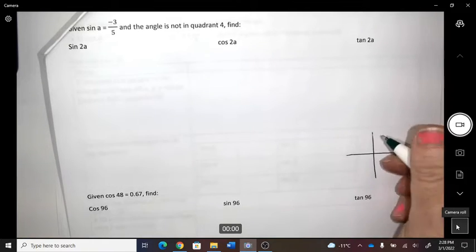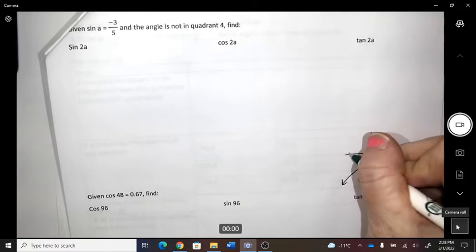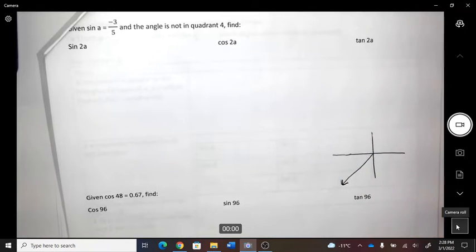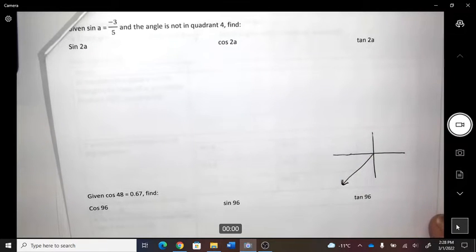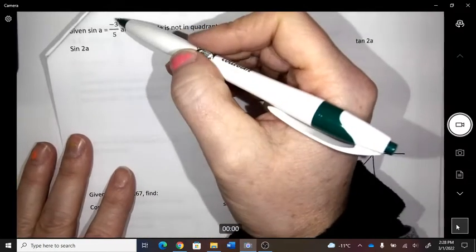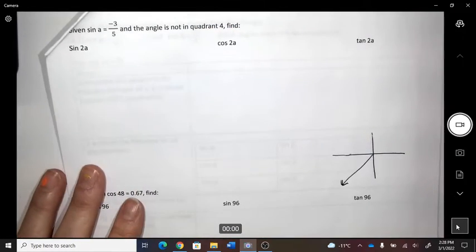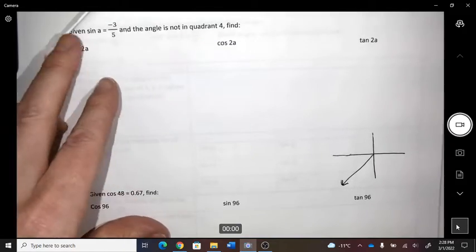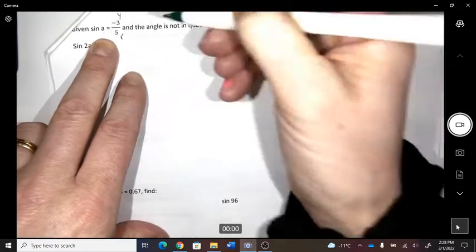In quadrant 3. Okay, so let's talk about sine. What letters, as in X, Y, R, do I have? Y and R.